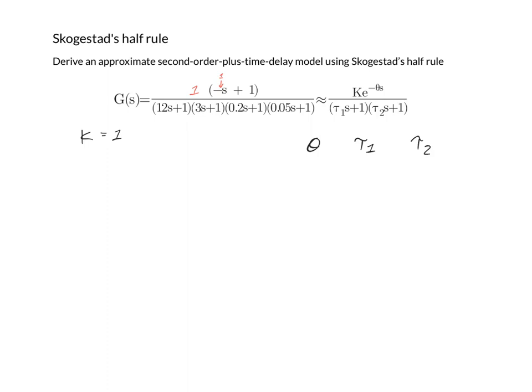In Skogestad's method, we first identify the time constants that will be retained. Notice that we've written the transfer function in descending time constant order. In other words, the large time constants appear first and the small time constants come after. This makes it easy to identify which time constants to retain. We'll simply discard the lower time constants and retain the high time constants.